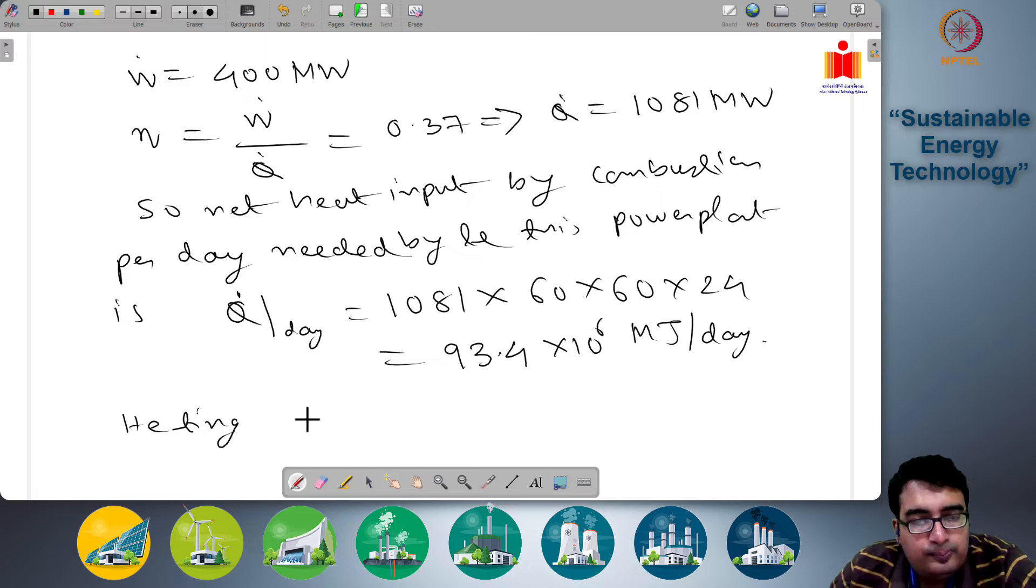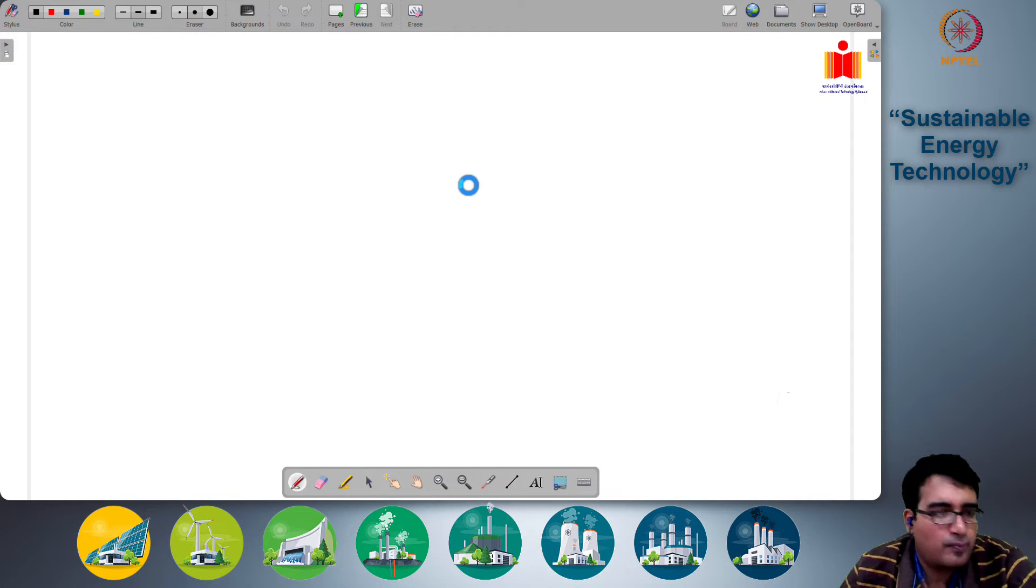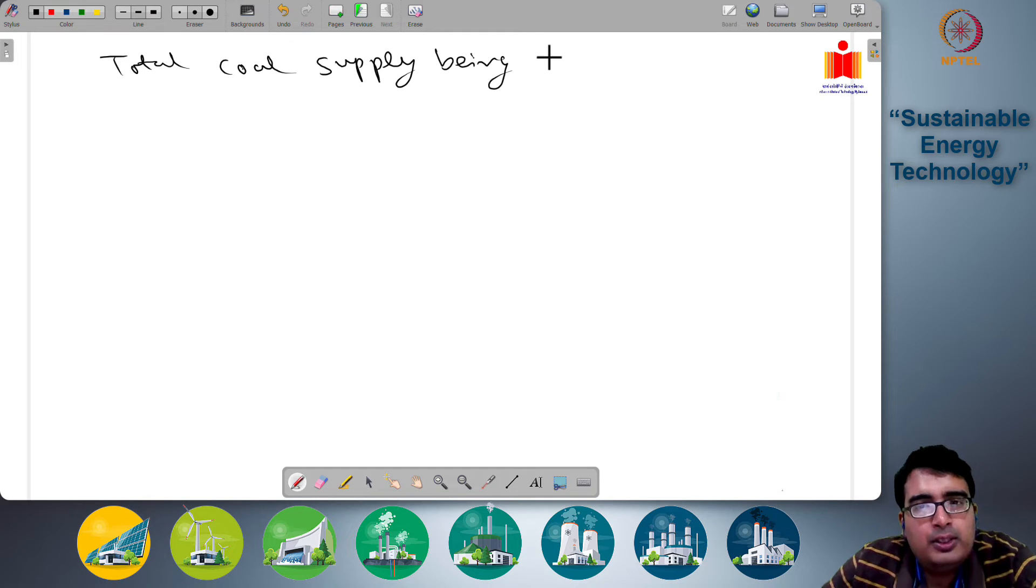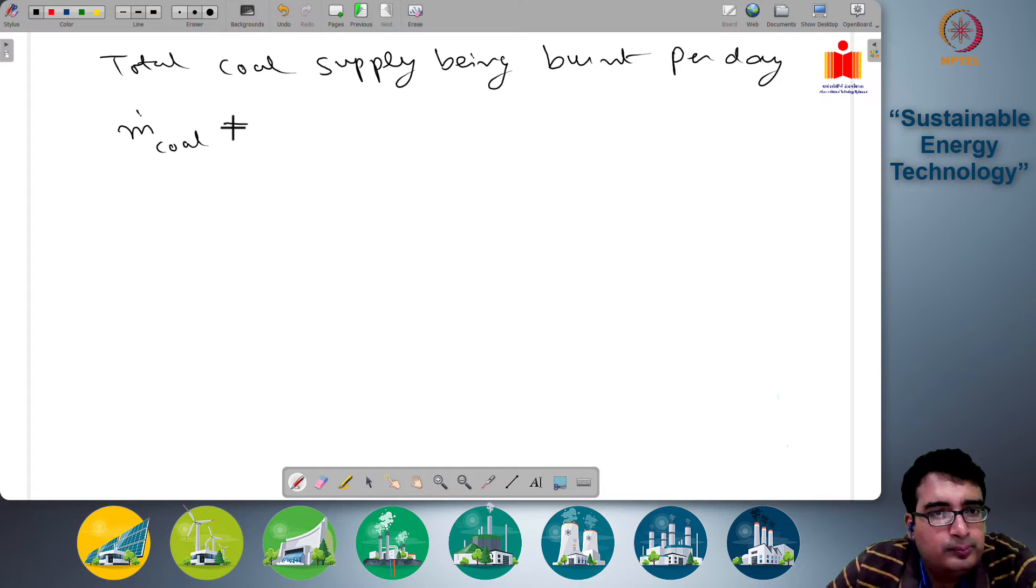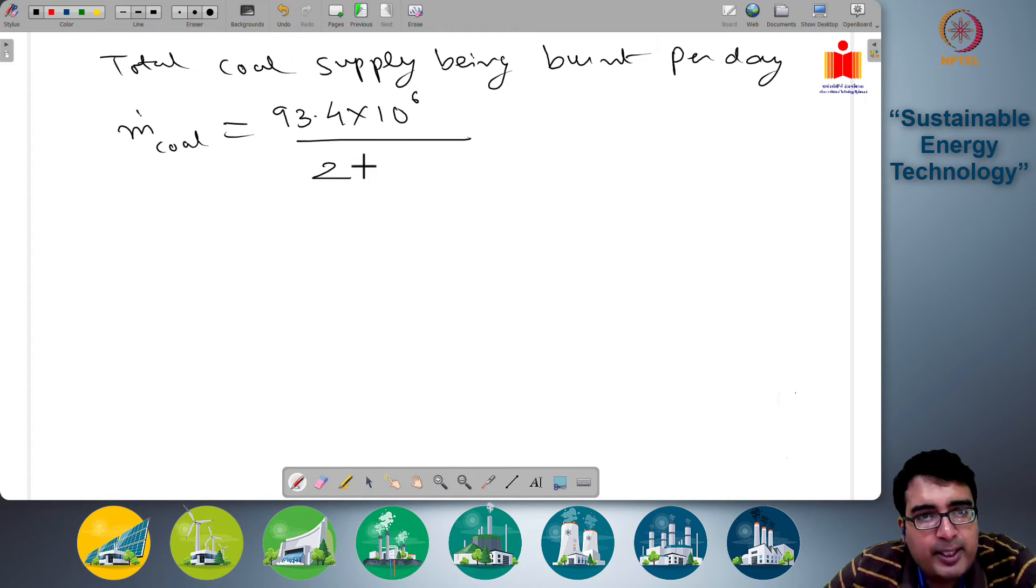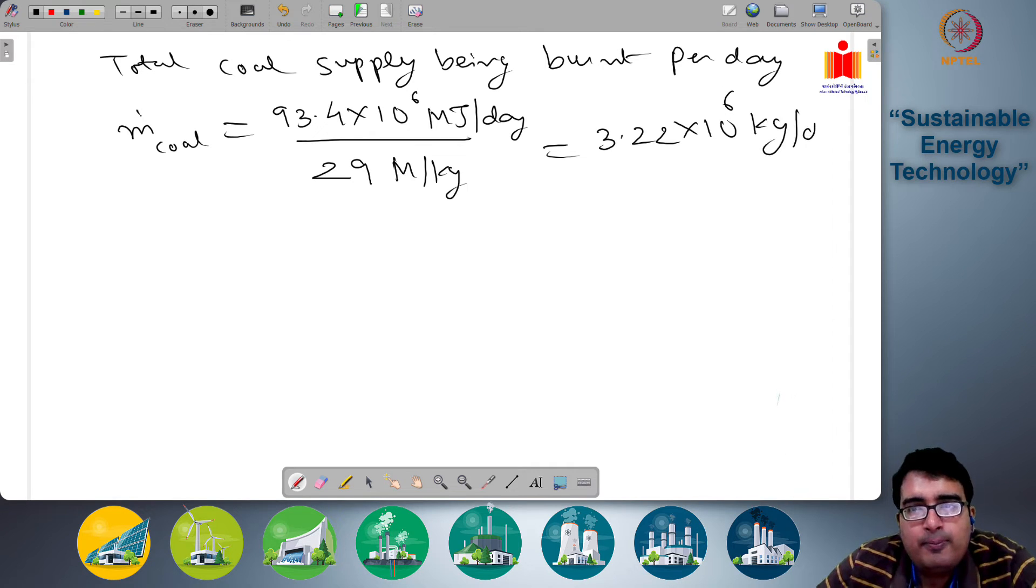Heating value of coal is 29 megajoules per kg. So total coal supply being burnt per day, m dot coal, is the amount of heat required, 93.4 × 10^6 megajoules per day, divided by 29 megajoules per kg. So this is megajoules per day, this is megajoules per kg, which gives you 3.22 × 10^6 kg per day of coal.